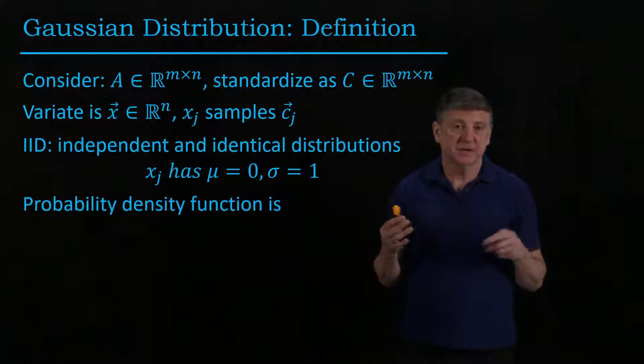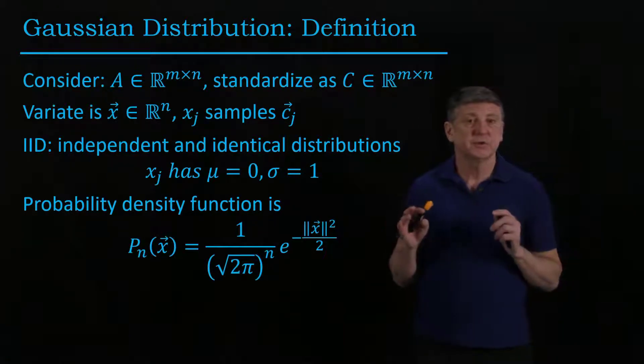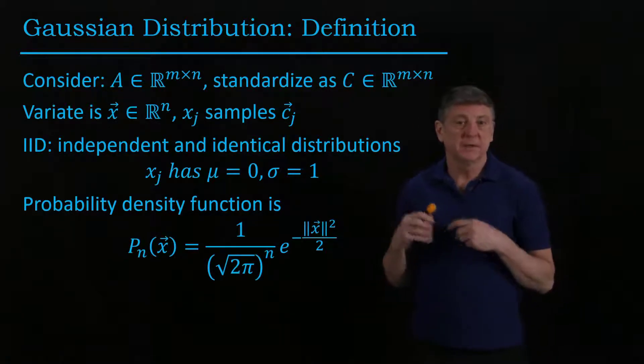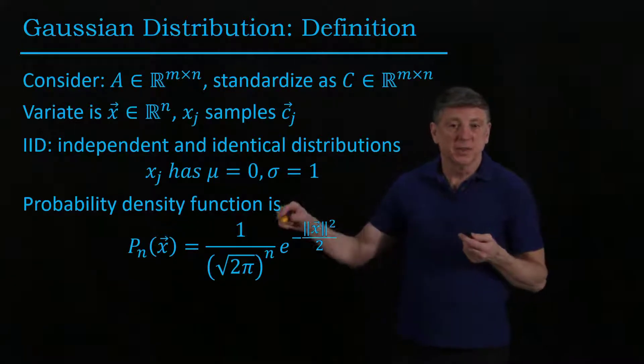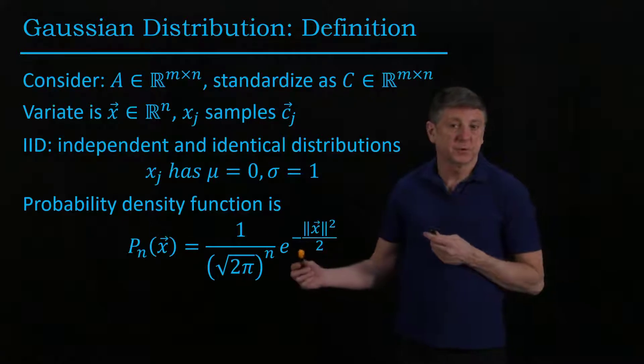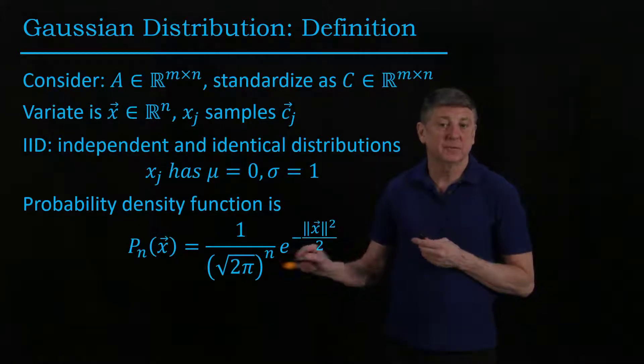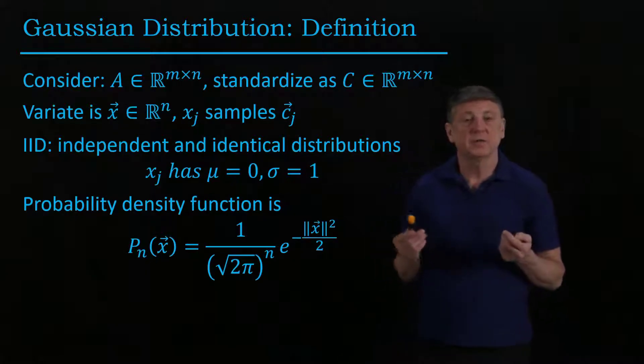The probability density function is a Gaussian, and there's a factor that's used in statistics to adjust for the volume depending on the number of dimensions. So that is our usual Gaussian that we've used, that we've come across previously in this course, and then there's a factor that we have to multiply it by that depends on the number of dimensions.